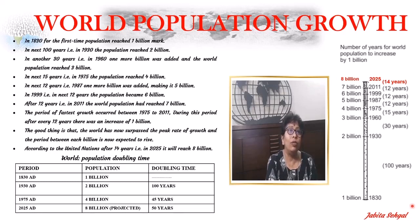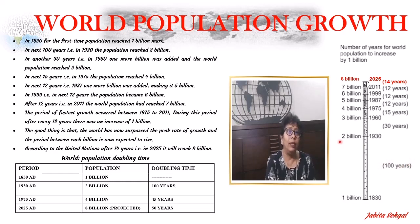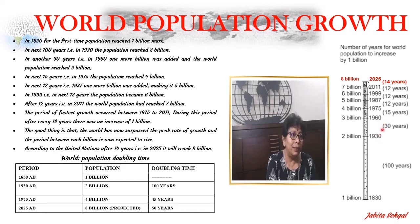It was for the first time in 1830 that the world reached its first billion. It then took another 100 years to reach 2 billion in 1930. By the third billion, this period had reduced to 30 years, reaching 3 billion in 1960. It reduced further to 15 years to reach 4 billion.